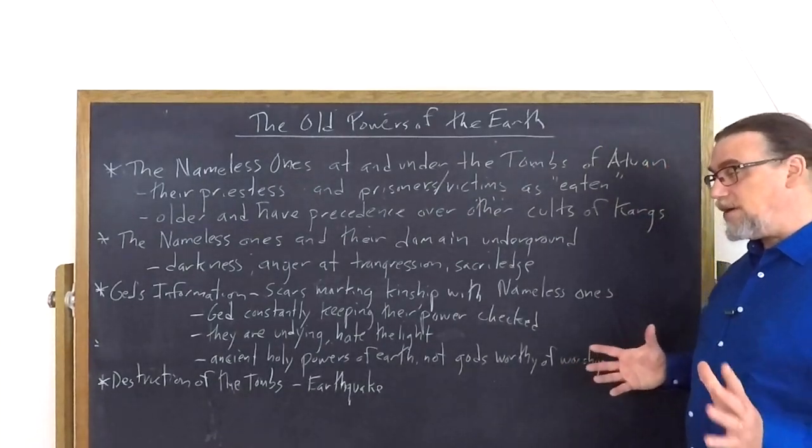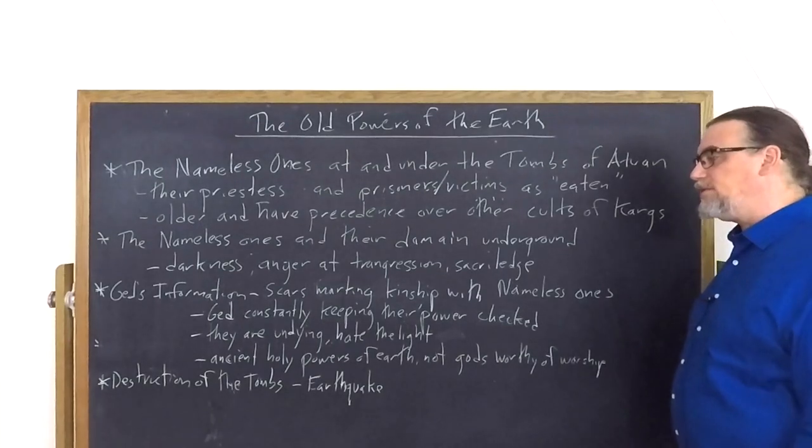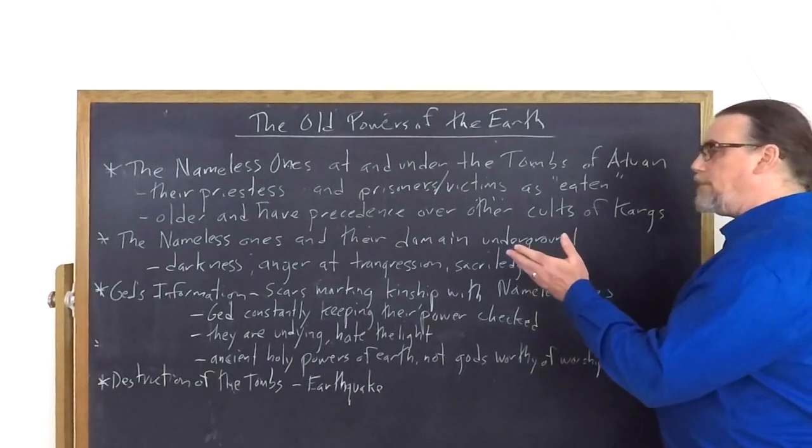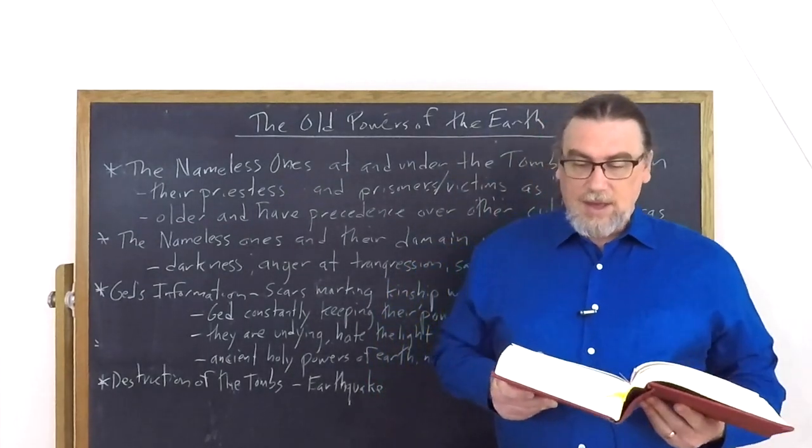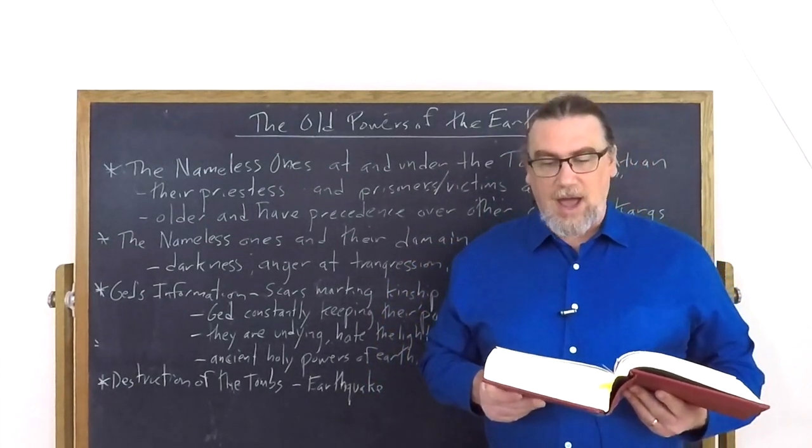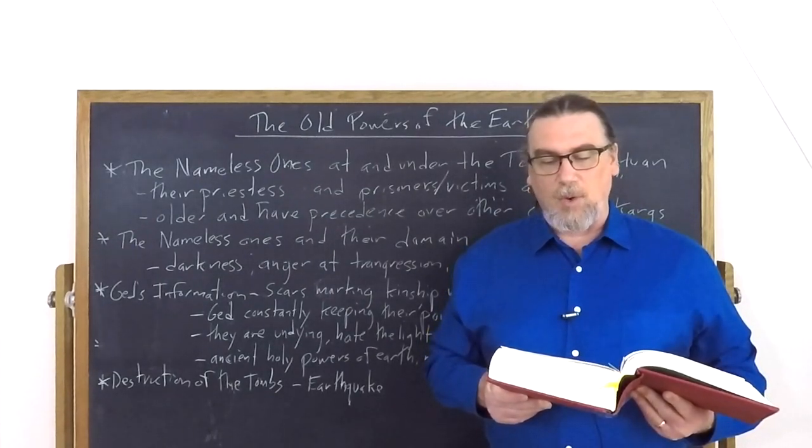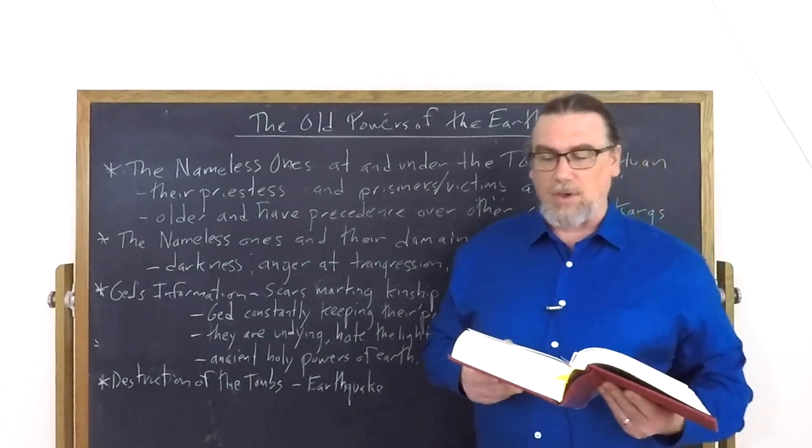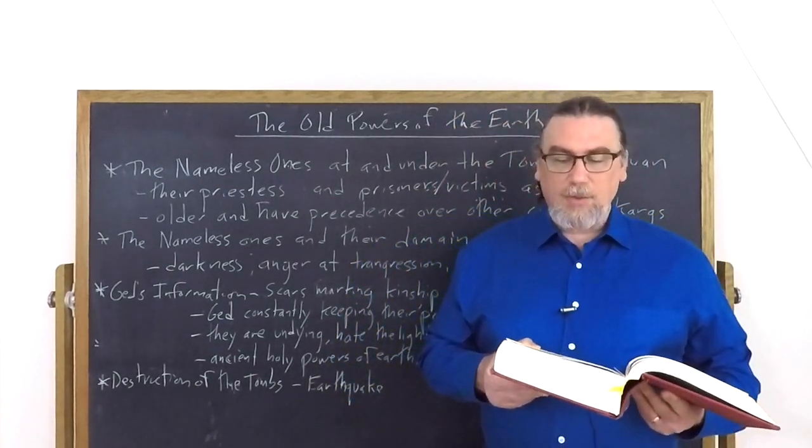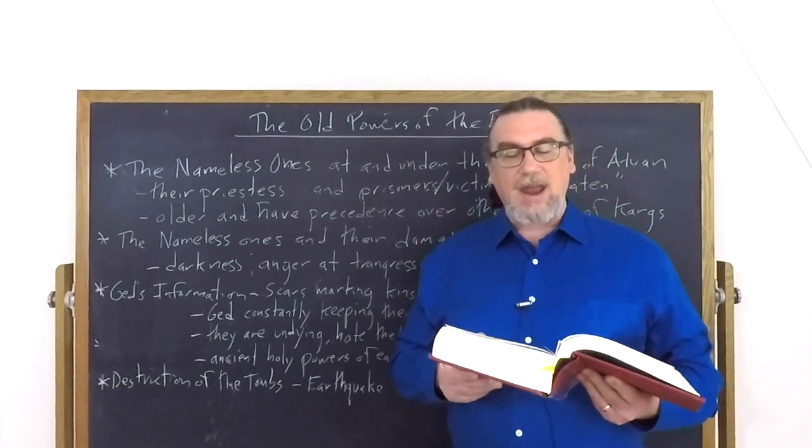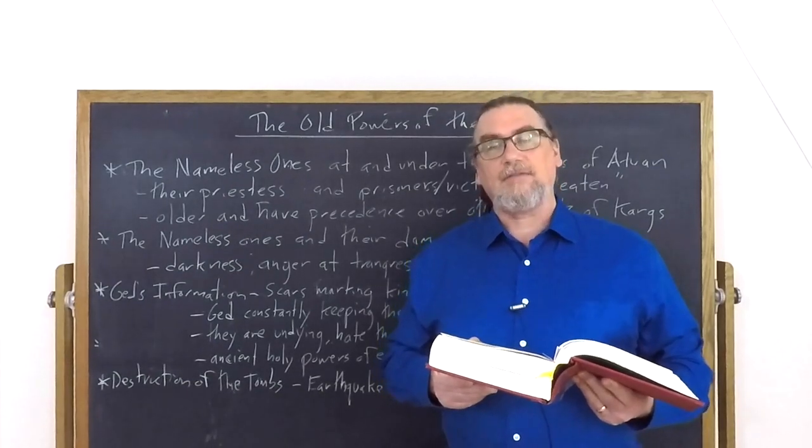Ged also tells us some very important things, tells Tenar or Arha about the powers. He says, 'They are dark and undying. They hate the light, the brief, bright light of our mortality. They are immortal. All their power is to darken and destroy. They cannot leave this place. They are this place and it should be left to them.'